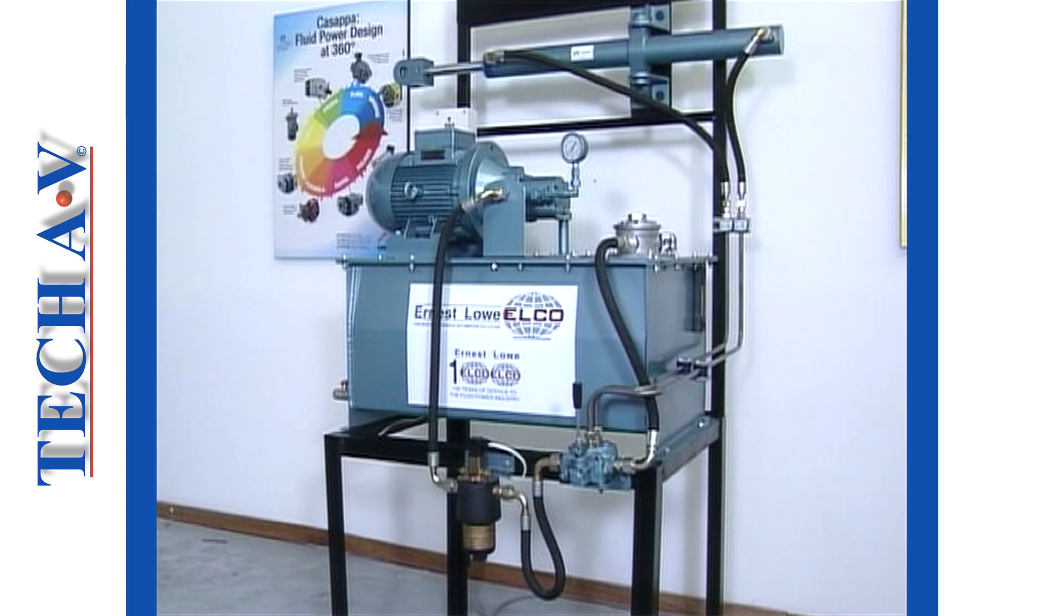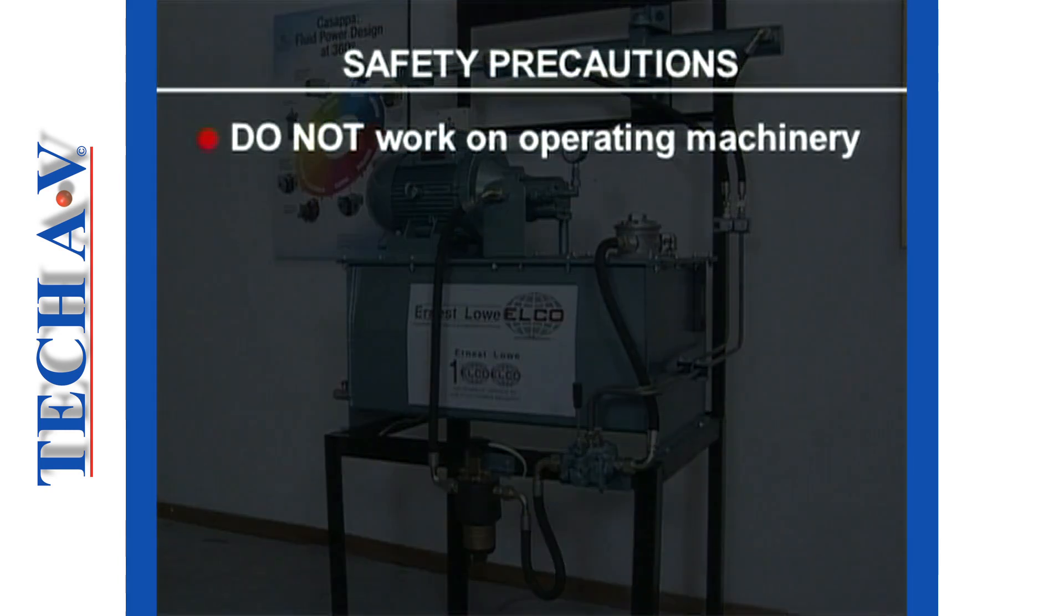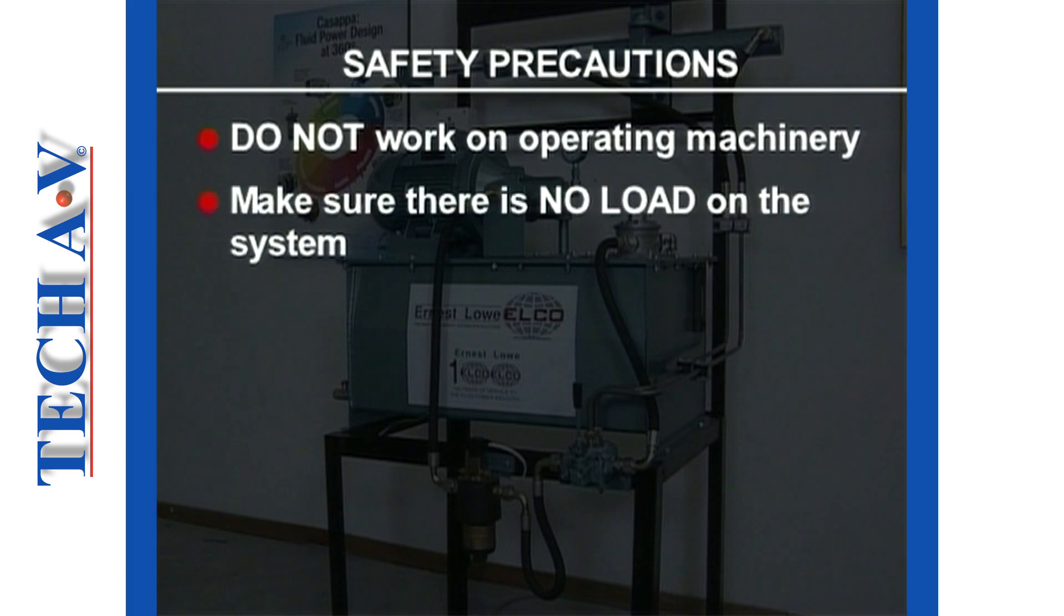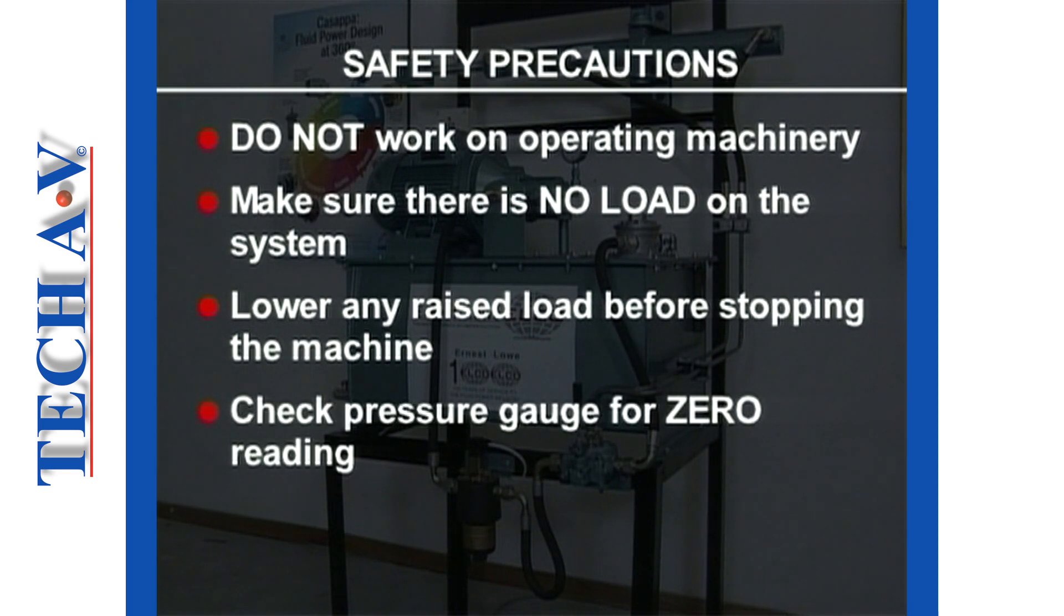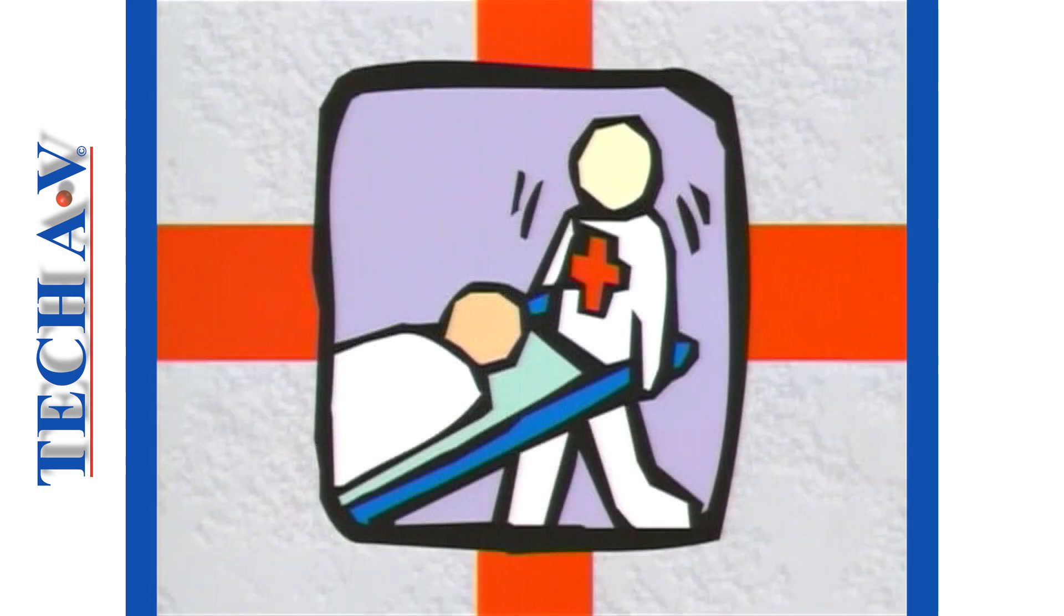Here are some safety precautions that you must adhere to when working on hydraulic lines. Do not work on connections when the machinery is operating. Make sure that there is no load on the system. Lower any raised load before stopping the machinery. Check the pressure gauge for zero pressure before working on a connection. Failure to observe these simple rules will put you or others at risk of injury in the event of sudden pressure release.